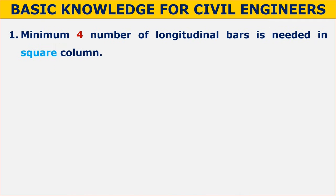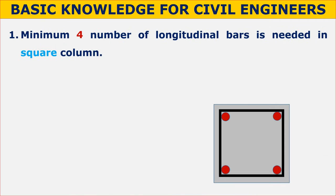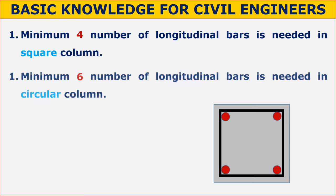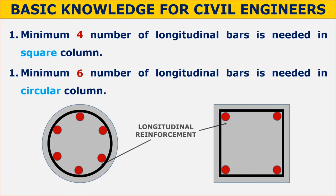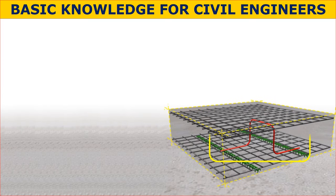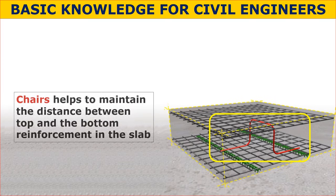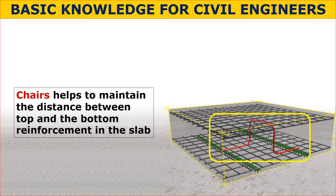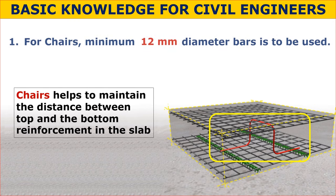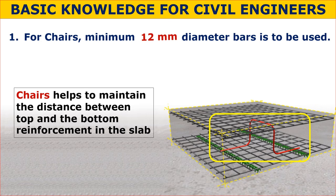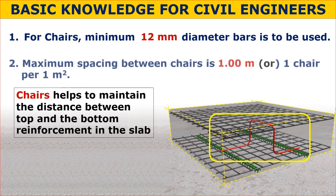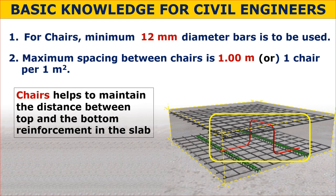A minimum of 4 longitudinal bars is needed in a square column, and a minimum of 6 longitudinal bars is required in a circular column. Chairs help maintain the distance between the top and bottom reinforcement in a slab. For chairs, a minimum 12 mm diameter bar is to be used, and the maximum spacing between chairs is 1 meter, or 1 chair per meter square.